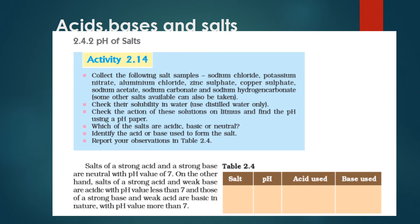So the pH value of a salt can fall in three conditions: it can be acidic, it can be basic, or it can be neutral. If the salt is of a strong acid and a weak base, pH is less than 7. If it is of a strong base and a weak acid, pH is more than 7. And if the salt is of a strong acid and a strong base, it is always neutral.